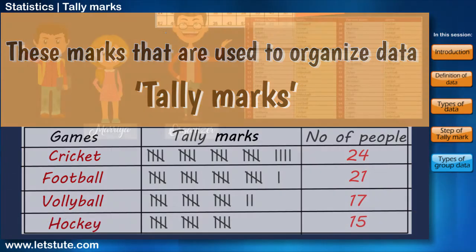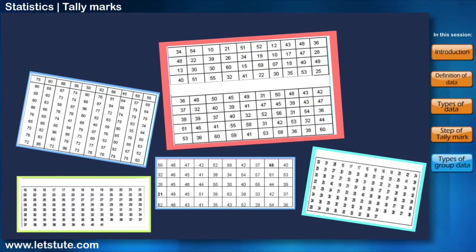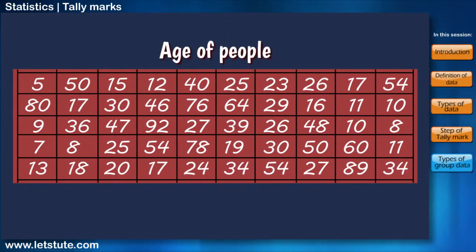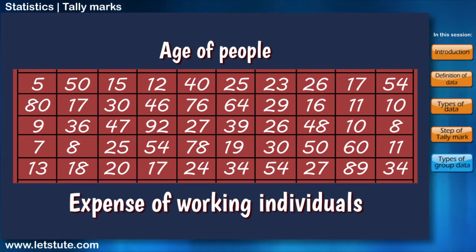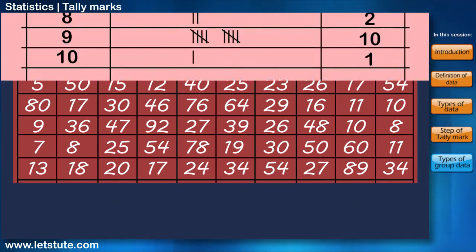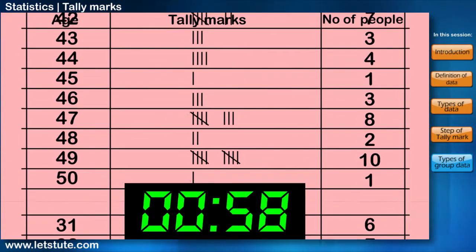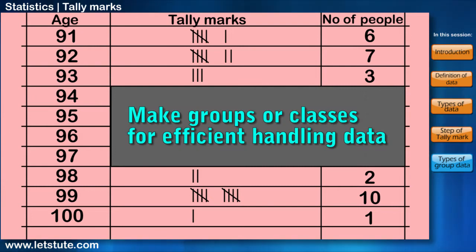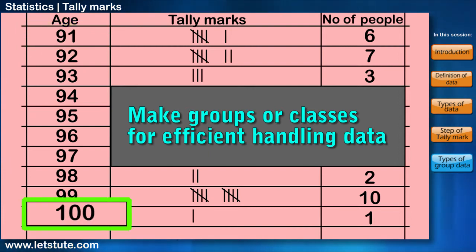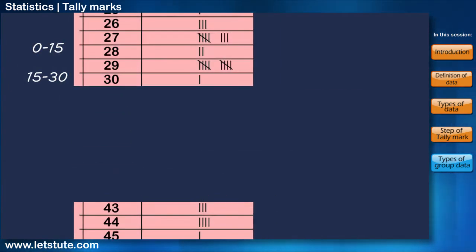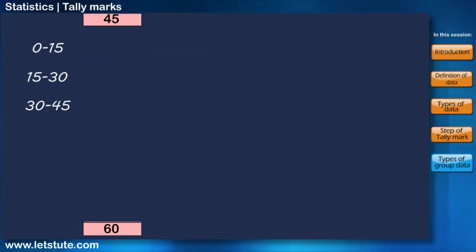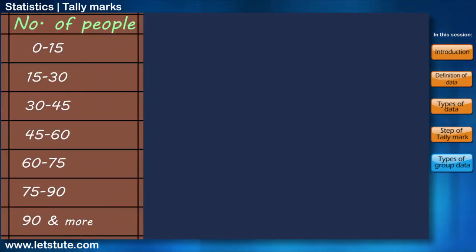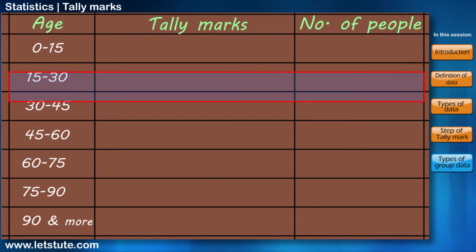But sometimes the given data is too large — for example, data that deals with age of people or expenses of working individuals, etc. In all these cases, sorting of data becomes a time-consuming process. So, to handle data more efficiently, we can first make groups or classes depending on the lowest and the highest value, like 0 to 15, 15 to 30, 30 to 45, 45 to 60, and so on. Then we can sort each data value into the class it will fall in.